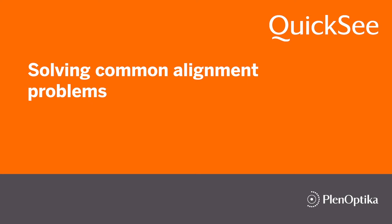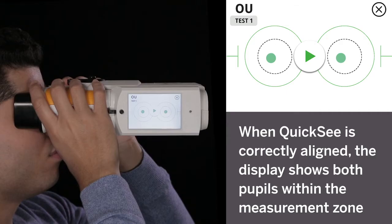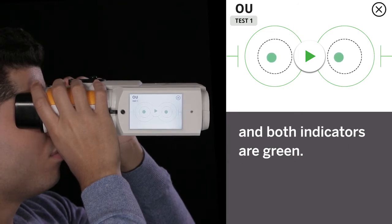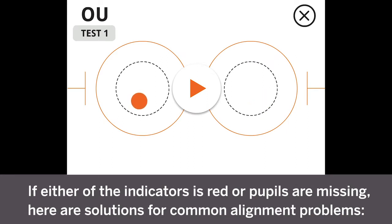This video will show solutions for common QuickSee alignment problems. When QuickSee is correctly aligned, the display shows both pupils within the measurement zone and both indicators are green. If either of the indicators is red or pupils are missing, here are solutions for common alignment problems.